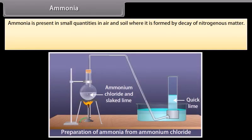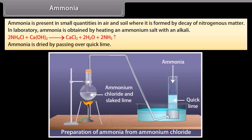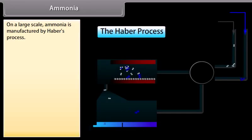Ammonia is present in small quantities in air and soil, where it is formed by the decay of nitrogenous matter. In the laboratory, ammonia is obtained by heating an ammonium salt with an alkali and is dried by passing over quick lime. On a large scale, ammonia is manufactured by Haber's process.